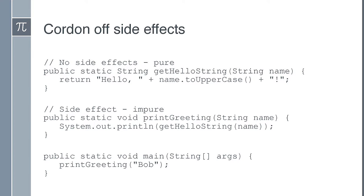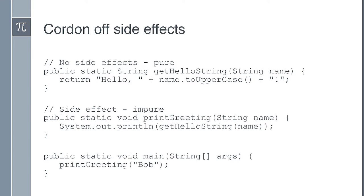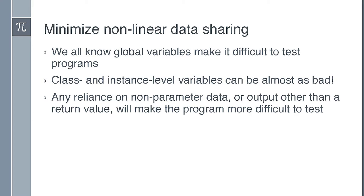So I extracted a getHelloString method that returns 'hello' plus the name uppercased — now I have a pure function with no side effects. The side-effectful method still exists and calls the pure one. Pure functions can't call methods with side effects, but a side-effectful method can call a pure function. As a side effect of this refactoring, we've also eliminated any local variables other than the arguments.